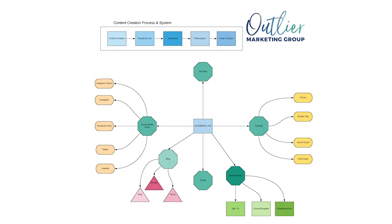I want you to think of content in two ways: macro content and then micro content. Macro content is content that is longer in form and has a longer lifespan. So think blogs, because they're search engine friendly. Think podcasts, think YouTube videos. Anything that you create that lives on for days, weeks, months at a time.